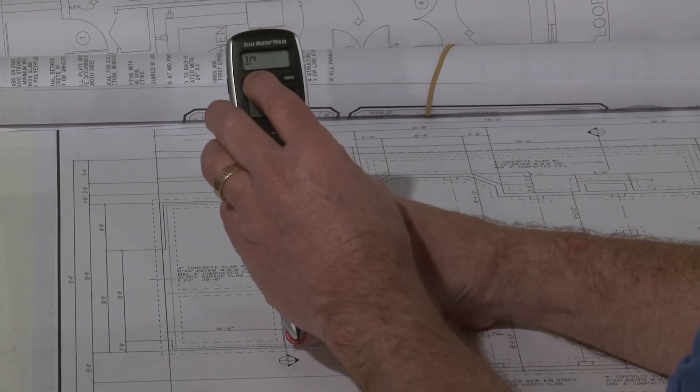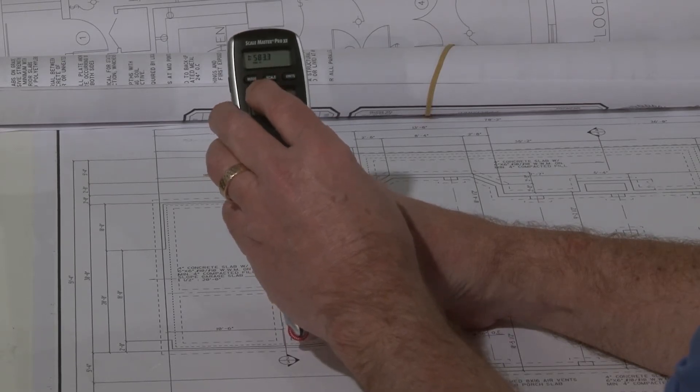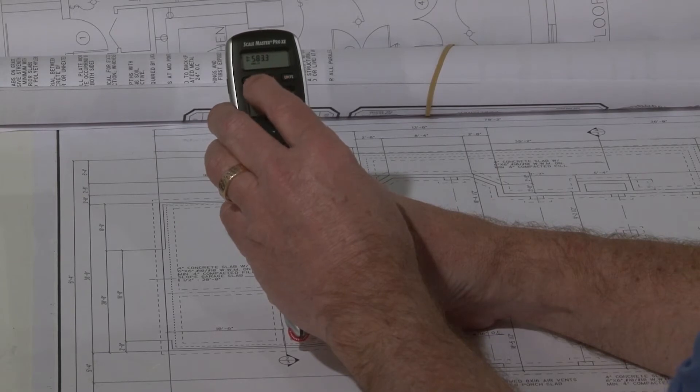You can move it over to another mode like Engineering 1 which has scales like 1-10, 1-20, 1-50, 1-60. Engineering 2 which are larger scales like 1-300, 400, 500, 583.